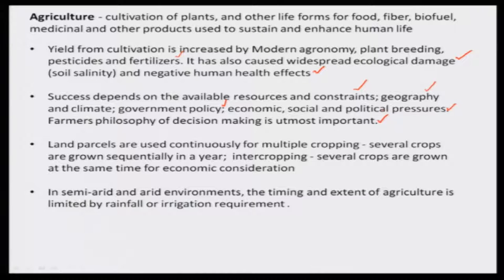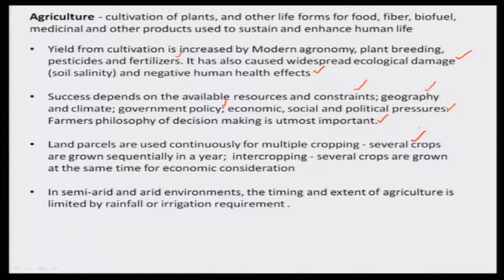Land parcels used continuously for multiple cropping — meaning several crops are grown subsequently in a year — as well as intercropping, where several crops are grown at the same time for economic considerations.